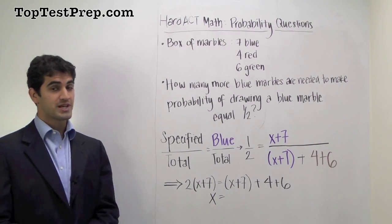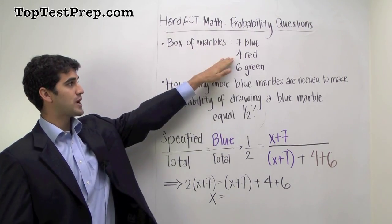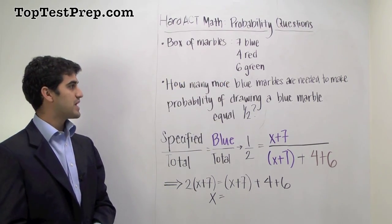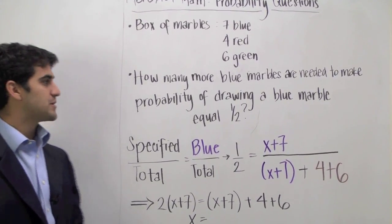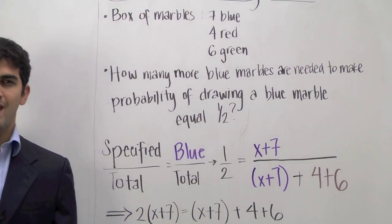Let's say you have a box of marbles that has 7 blue marbles, 4 red marbles, and 6 green marbles. And you are asked the question, how many more blue marbles are needed to make the probability of drawing a blue marble from the box equal to 1 half?